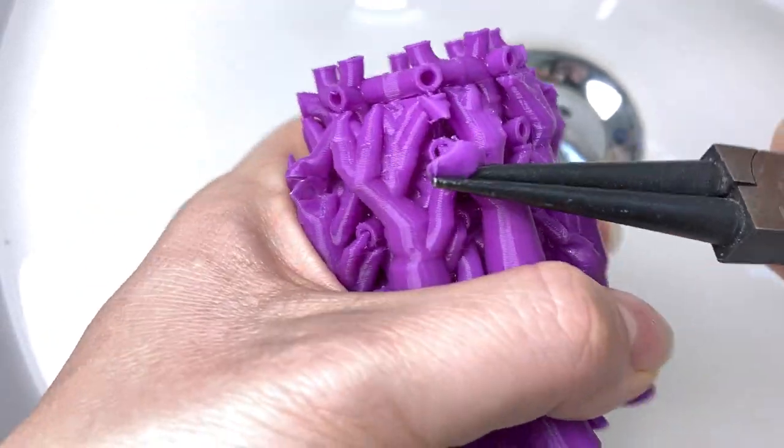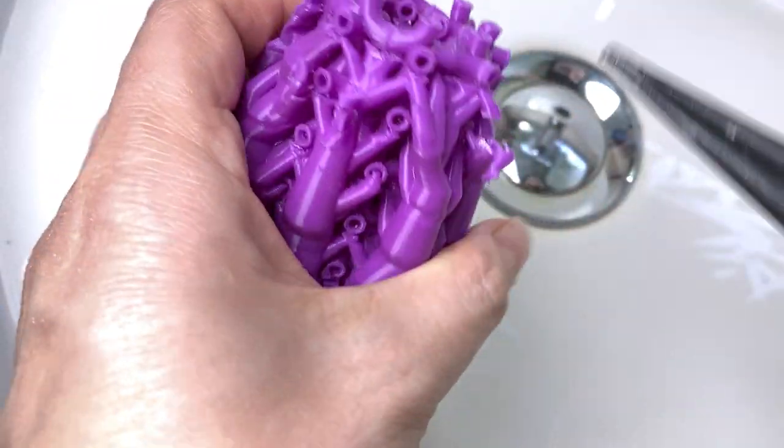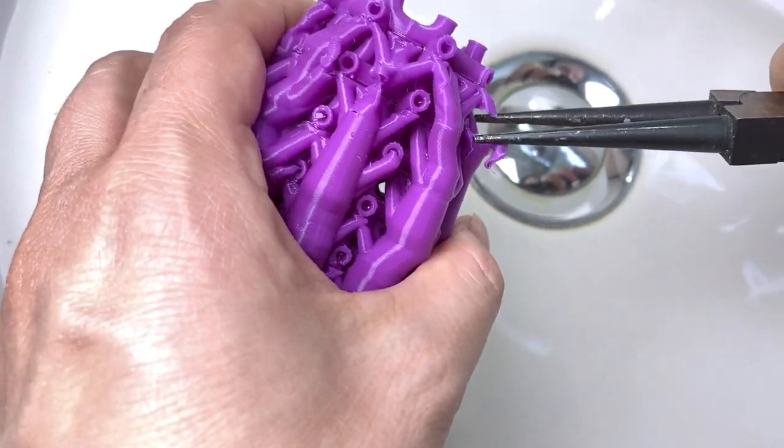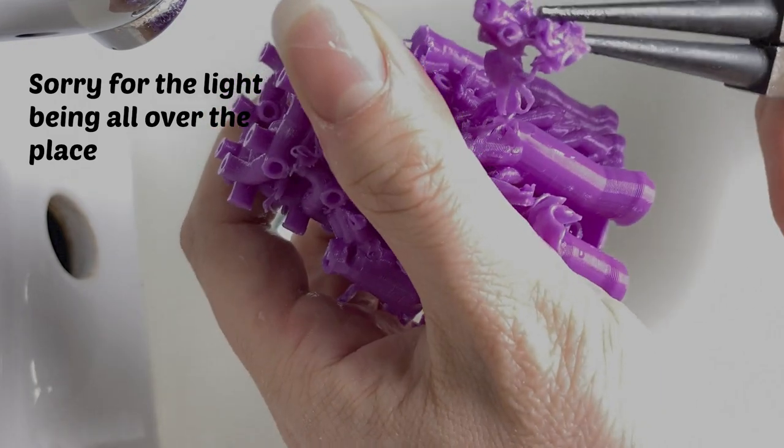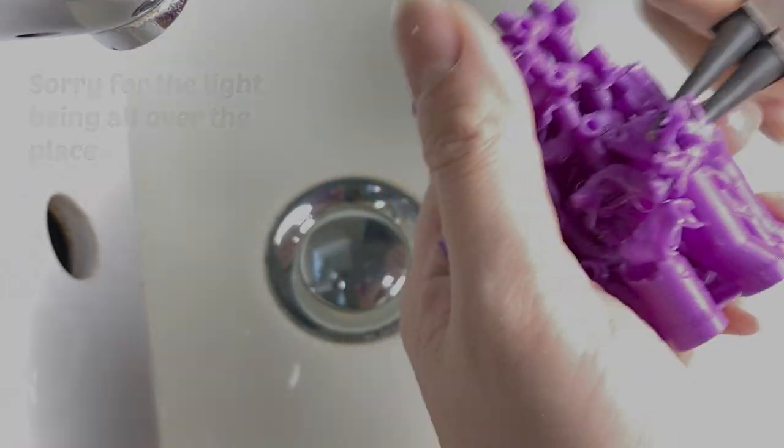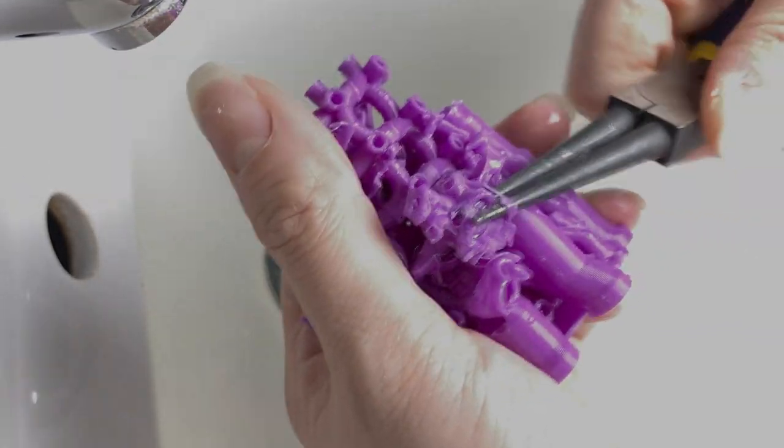I squeeze smaller tips of the branches, roll the pliers away to separate supports from the model. The rolling motion is the trick. You grab thinner and weaker parts, wrench them from the model with rolling motion, and then repeat and repeat some more.